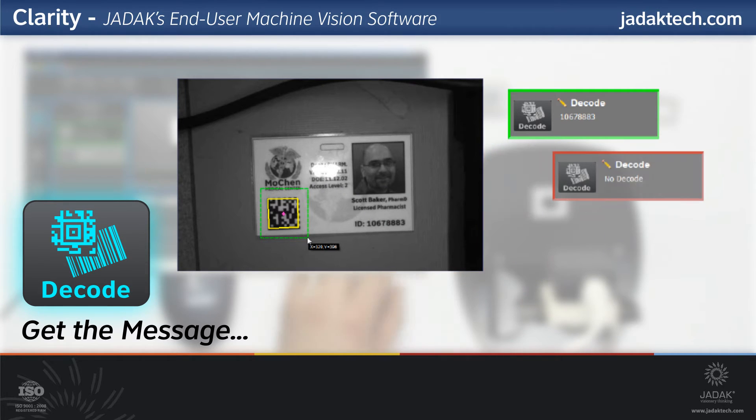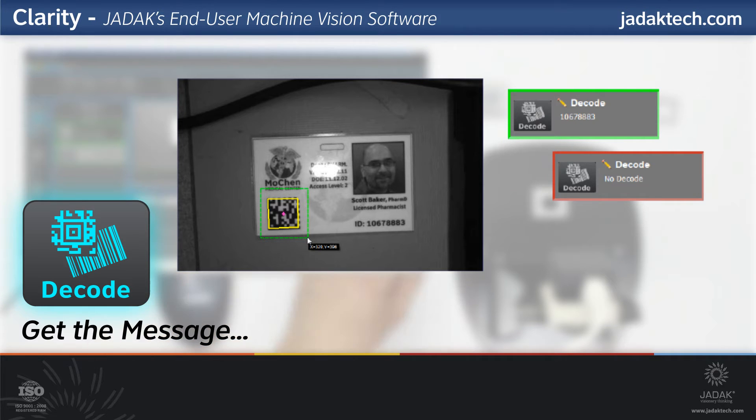Depending on how Clarity has been set up, there's an optional Decode plugin. If you have an image that contains a 1D or 2D barcode, you can use this plugin to decode it.